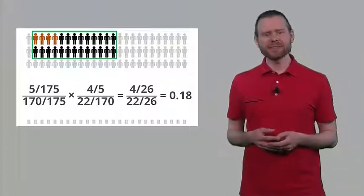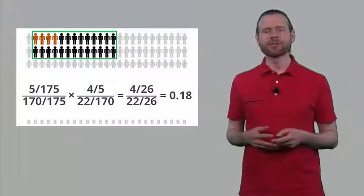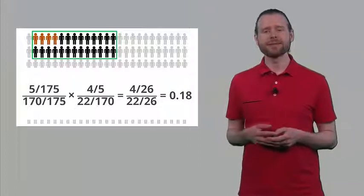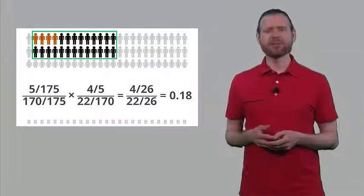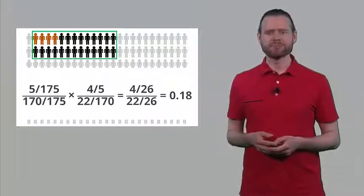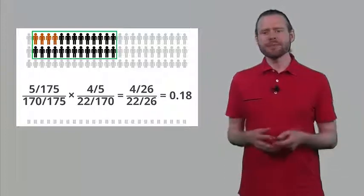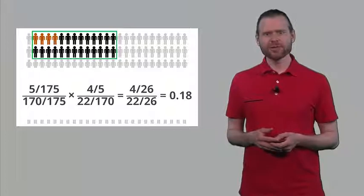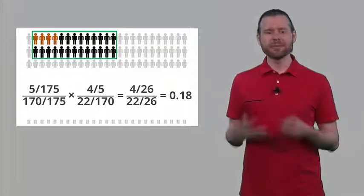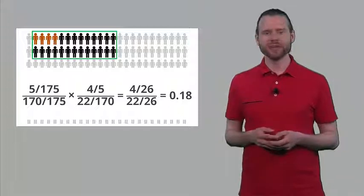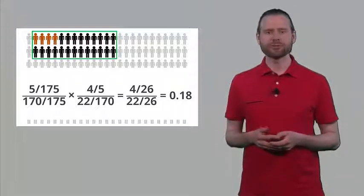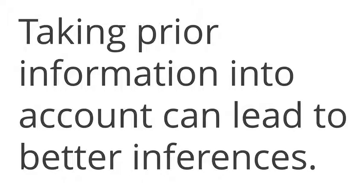So this probability is surprisingly low. We see that many medical doctors overestimate the probability that someone is really sick if the frequency of the illness is very low in the population. So at least some implicit Bayesian statistics is useful — realizing that if something is pretty rare to begin with, a positive test result might not tell you so much yet, and follow-up tests are definitely required.